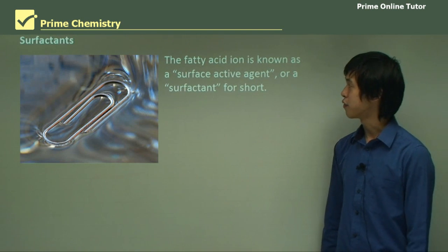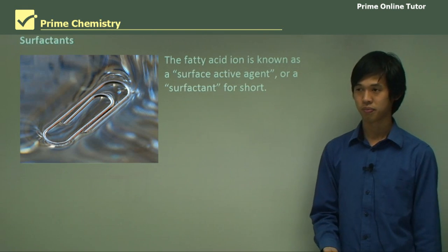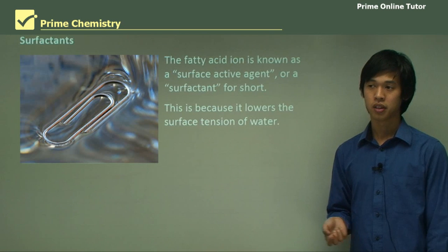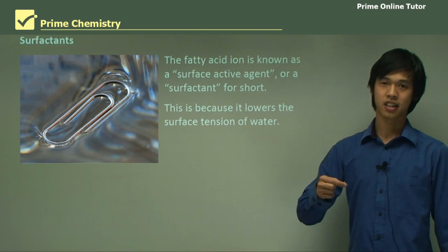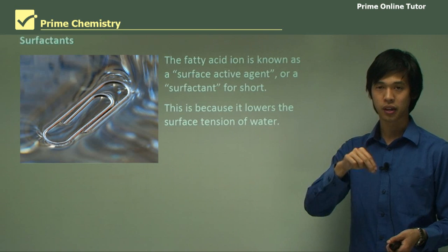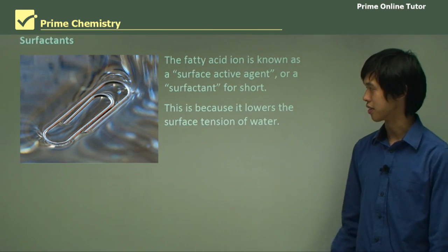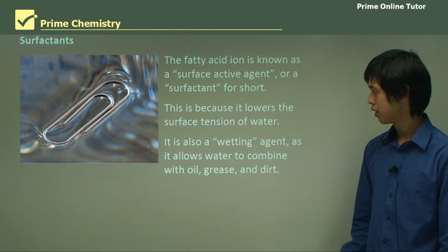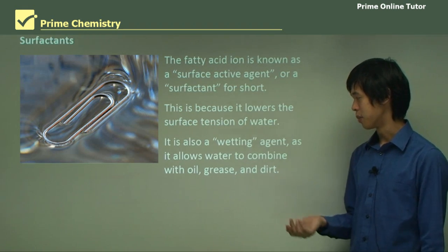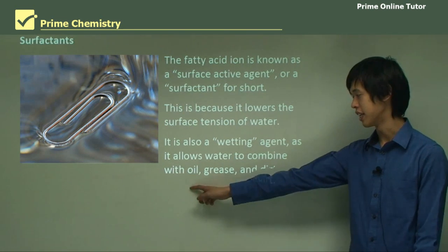The anion is the cause for soap's cleaning action. The cation has no function—the Na doesn't do anything once it's been dissolved. The fatty acid ion is known as a surface active agent, or surfactant for short. This is because it lowers the surface tension of water. It is also a wetting agent, as it allows water to combine with oil, grease, and dirt.